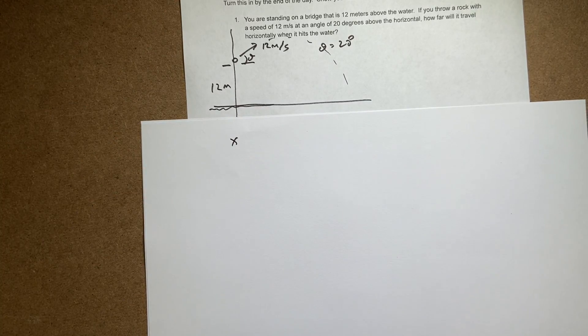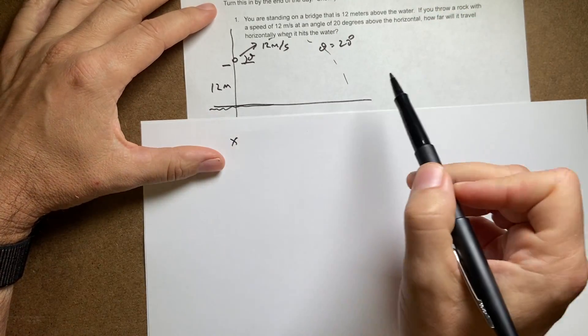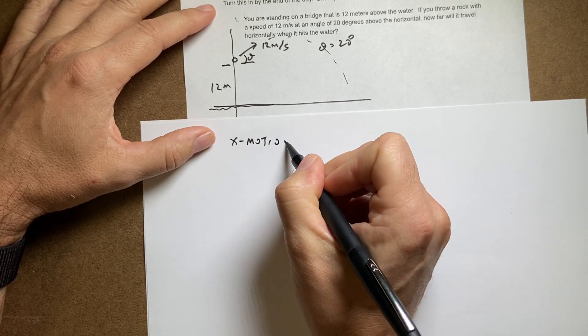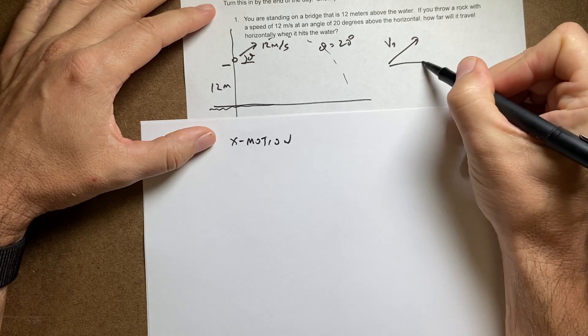So I have my x motion. Remember, this is projectile motion. In projectile motion, we have constant acceleration in the y direction, constant velocity in the x direction. In the x direction I can say this.